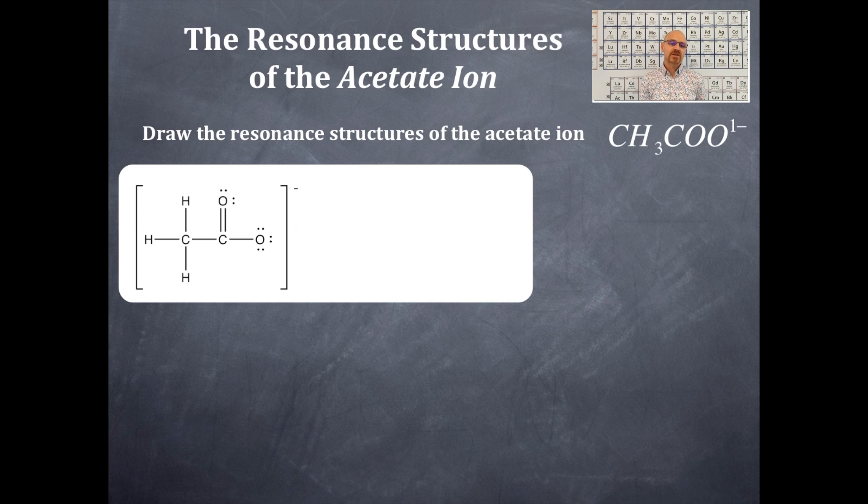Okay, you should see that that top oxygen is doubly bonded. Okay, and then the oxygen on the right-hand side is a single bonded oxygen. You should see that there's brackets around this molecule with the negative one charge in the upper right-hand corner.